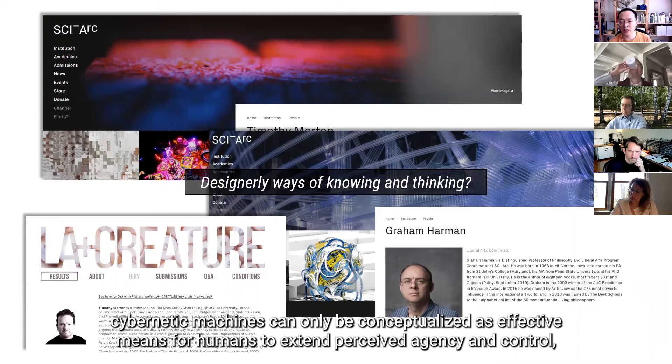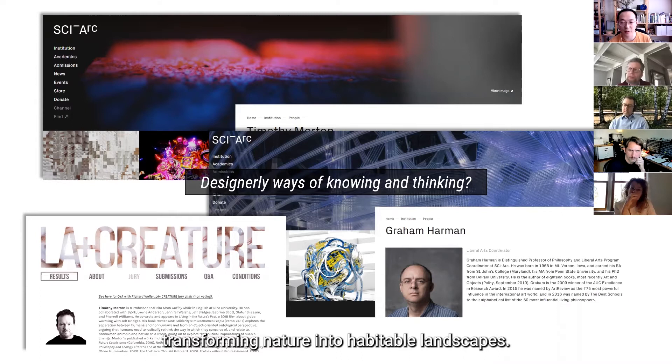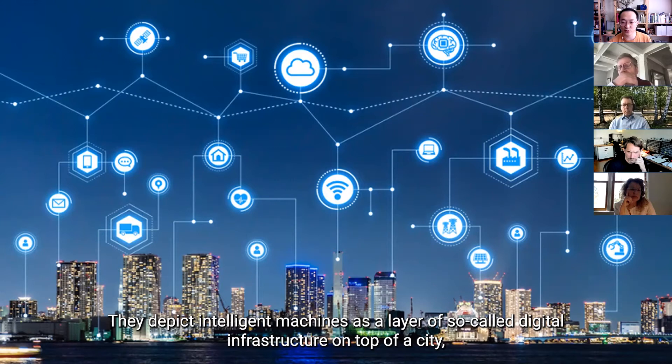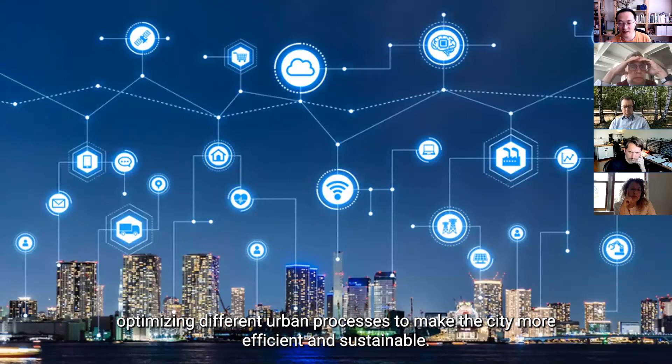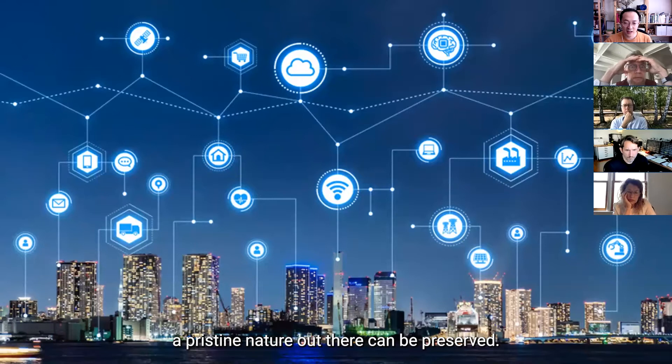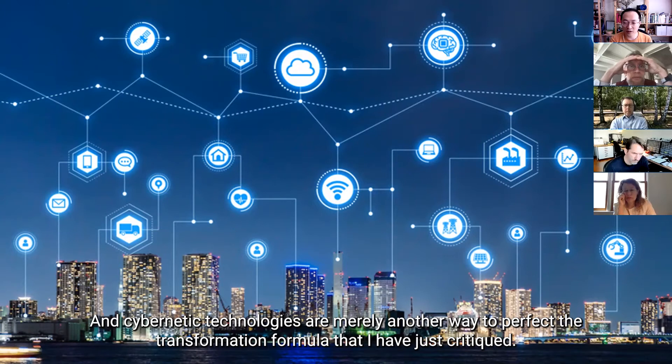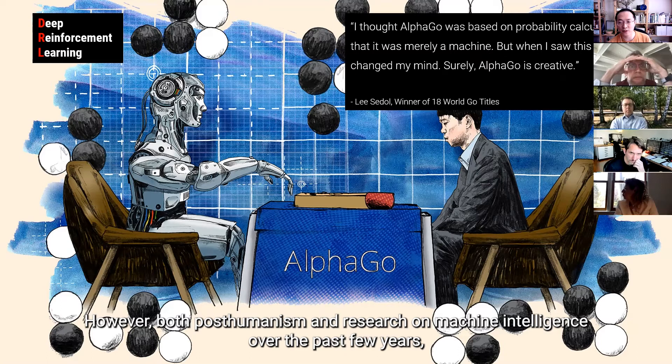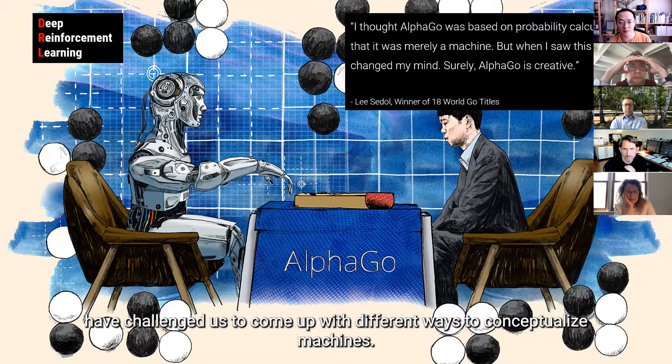So, I'll get back to this idea of design and speculation in a moment, because before that, I have to think about Triple O's implication on how we understand machine intelligence and its role in environmental practice. And as previously mentioned, following the transformation formula, cybernetic machines can only be conceptualized as an effective means for humans to extend perceived agency and control and transforming a nature into habitable landscapes. And for example, when you search smart cities, images like this are very common. And they depict intelligent machines as a layer of so-called digital infrastructure on top of a city, optimizing different urban processes to make the city appear to be more efficient and sustainable. And of course, another underlying reasoning is that when cities are more efficient, a pristine nature out there can be preserved. And cybernetic technologies are merely another way to perfect the transformation formula that I just critiqued.